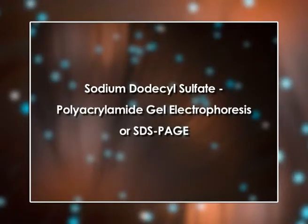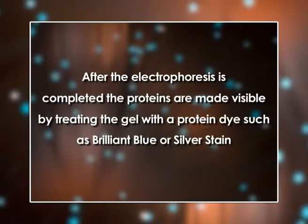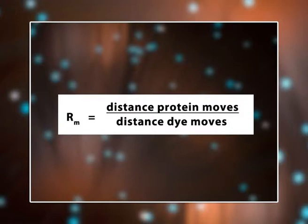As proteins travel through a gel network in SDS-PAGE, they are primarily separated on the basis of molecular weight — smaller proteins move more rapidly through the matrix than larger molecules. Tracking dye such as bromophenol blue is added to determine how far proteins have moved; this small charged molecule migrates ahead of the proteins. After electrophoresis, proteins are made visible by treating the gel with a protein dye such as Coomassie Brilliant Blue or silver stain. Relative mobility: Rm = distance protein moves / distance dye moves.